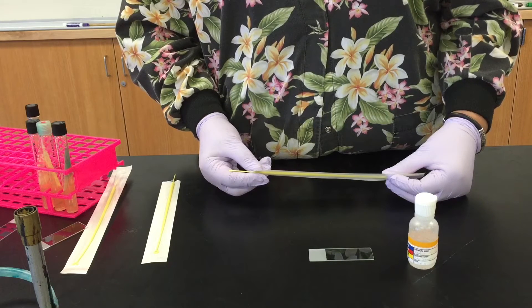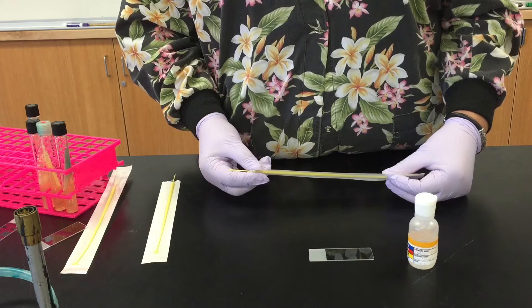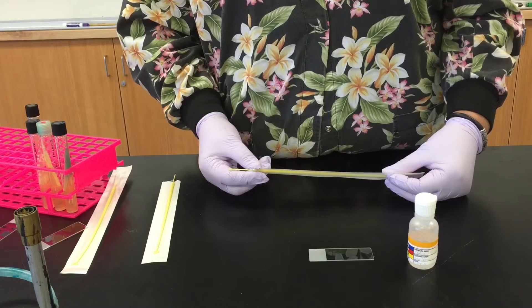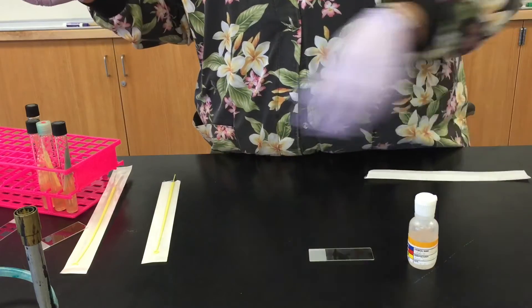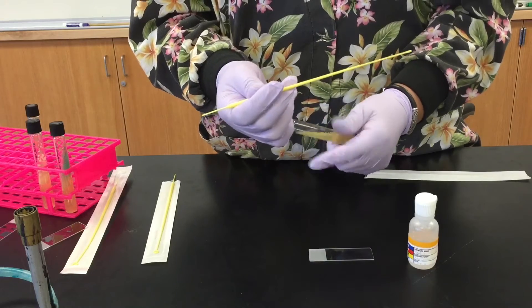We're using 30% hydrogen peroxide for this test. Renee is going to smear a little bit of the organism, a visible quantity of the organism, onto a clean microscope slide.